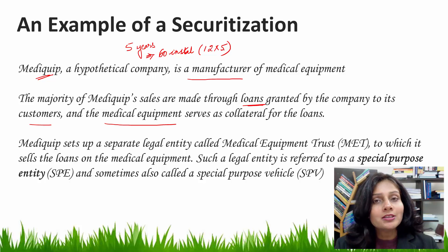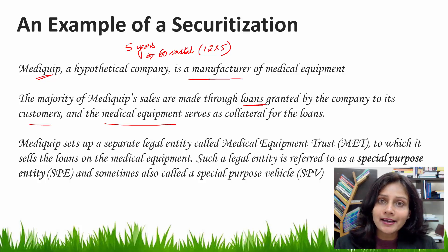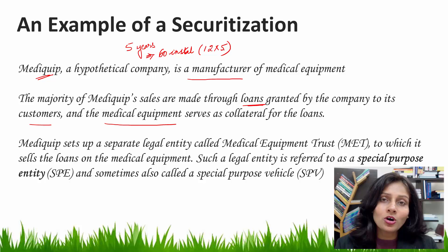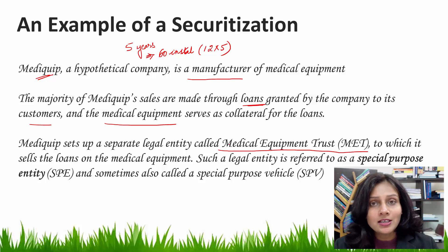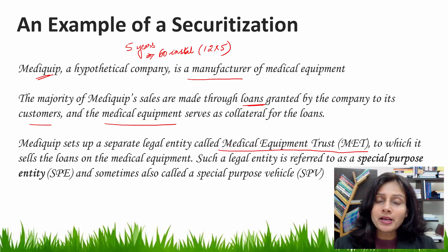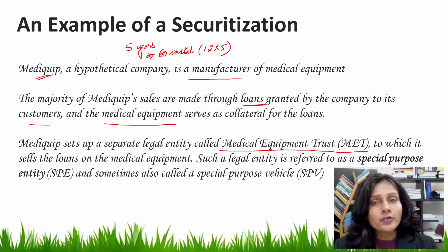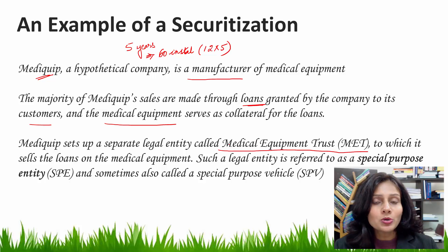after careful scrutiny, the treasurer realizes that securitization is going to be the cheapest method of funding. So the treasurer decides to raise $200 million by securitizing the loans sitting on its balance sheet as assets. To do so, MediCube sets up a separate legal entity called Medical Equipment Trust to which it sells off its loans on medical equipment. Such a legal entity can also be referred to as a special purpose entity, a special purpose vehicle, or a special purpose company. The legal form usually varies by jurisdiction, but in most cases the ultimate owner of the loans becomes the trust — the special purpose entity.